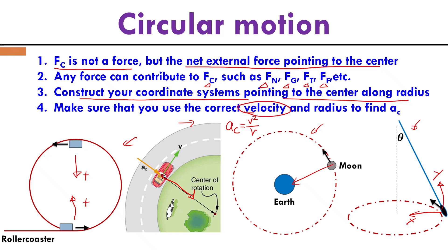When calculating centripetal acceleration using v² divided by r, remember to always use the correct velocity and correct radius. With all this knowledge, we should be able to calculate the critical speed, critical tension, and critical friction coefficient for circular motion, which we'll discuss in a separate video. Thank you, and I'll see you next time.